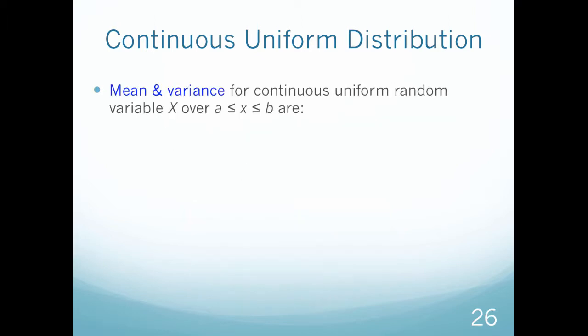We can calculate the mean and variance for this uniform distribution. Mu, or the average or expected value, is just a plus b over 2, the midpoint. And sigma squared, which is the variance, equals b minus a quantity squared divided by 12.